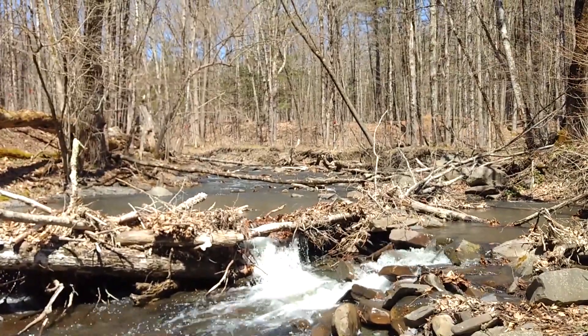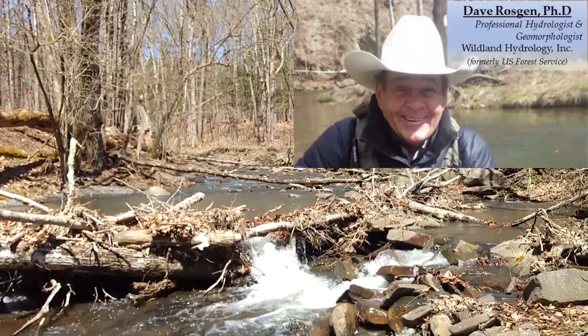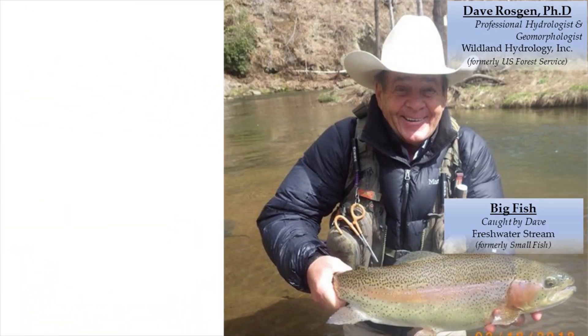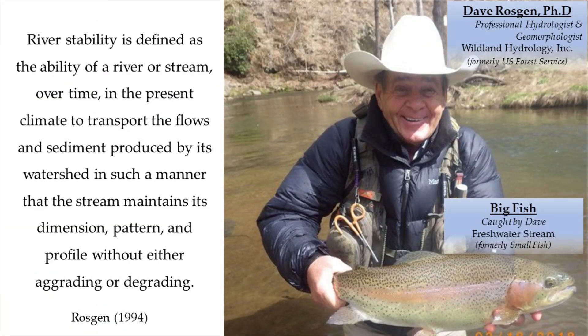A widely used definition of river or stream stability comes from Dave Rosgen, who says: river stability is defined as the ability of a river over time in the present climate to transport the flows and sediment produced by its watershed in such a manner that the stream maintains its dimension, pattern, and profile without either aggrading or degrading.